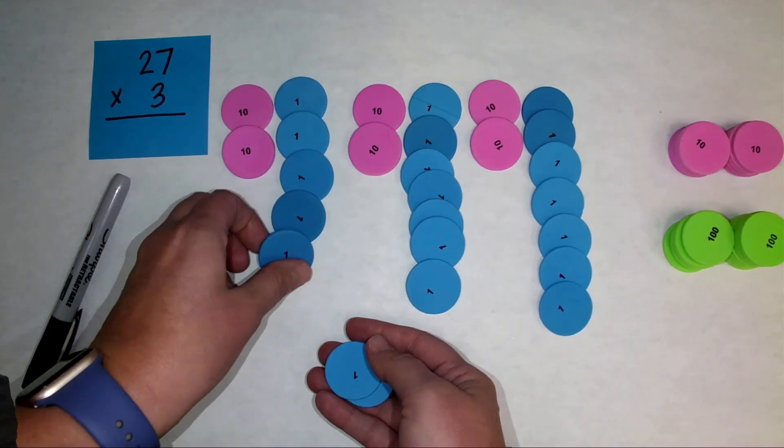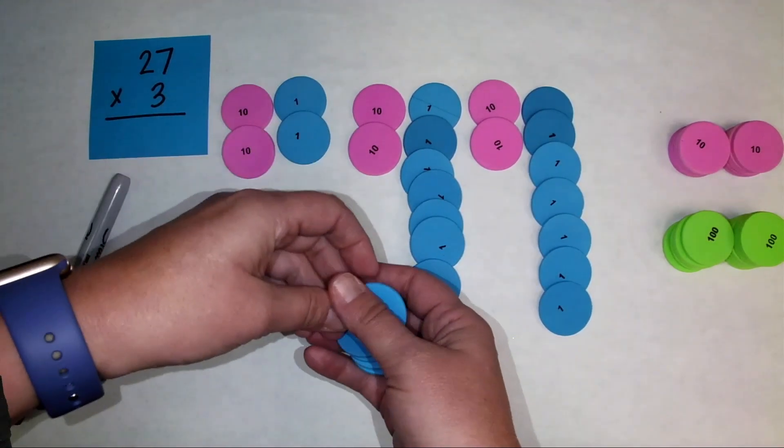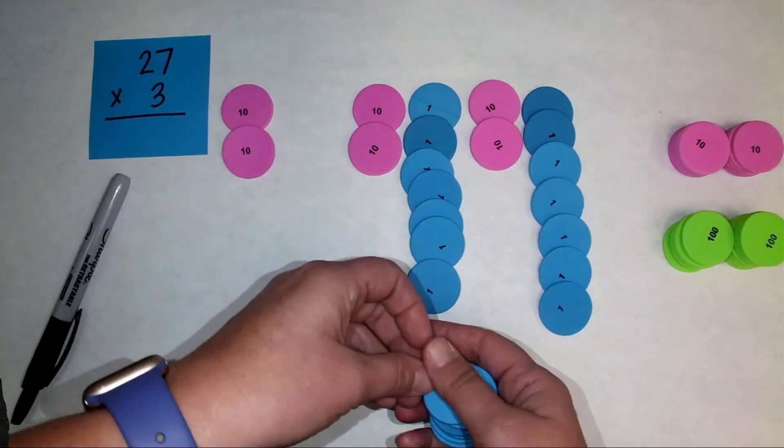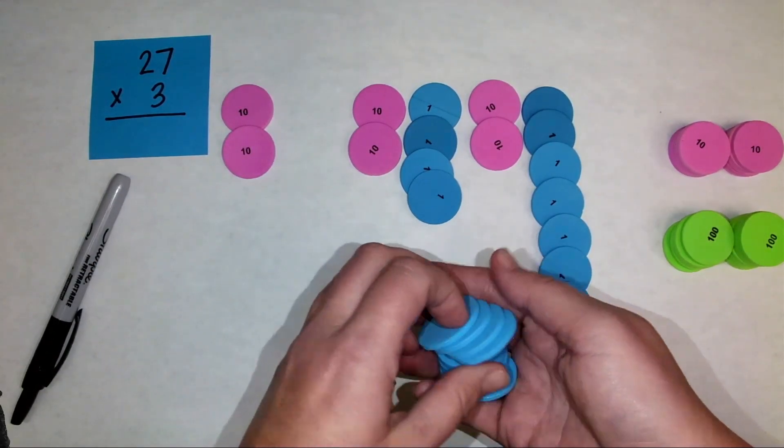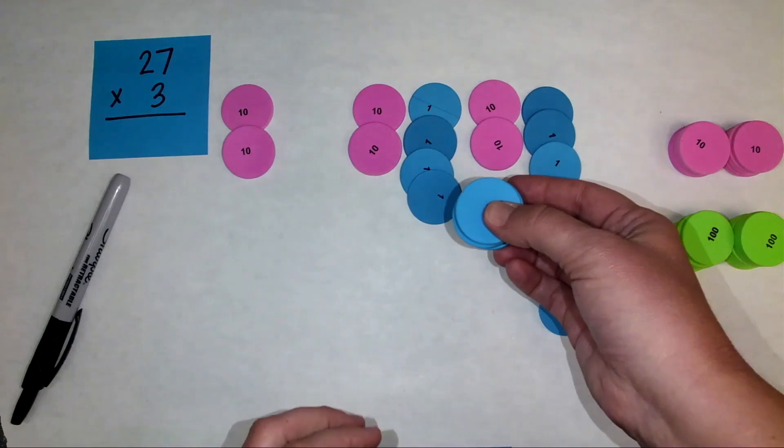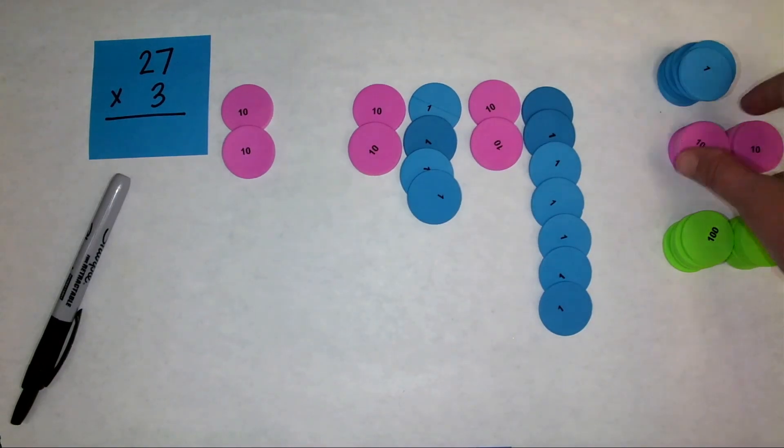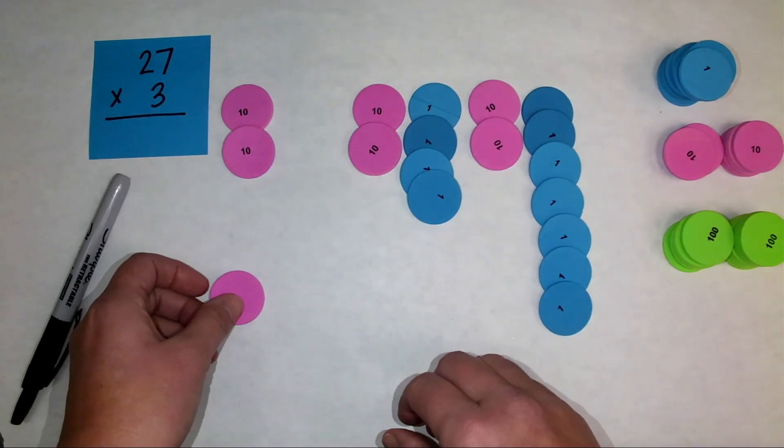So let's see, I have one, two, three, four, five, six, seven, eight, nine, ten. So here I know that ten ones is equivalent to one ten. I'll bring my ten in right here.